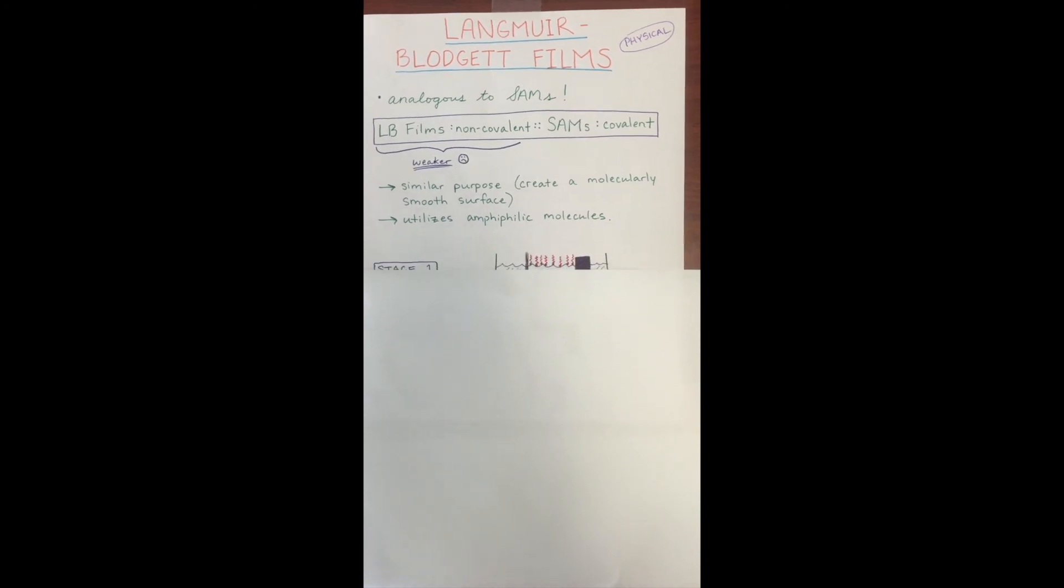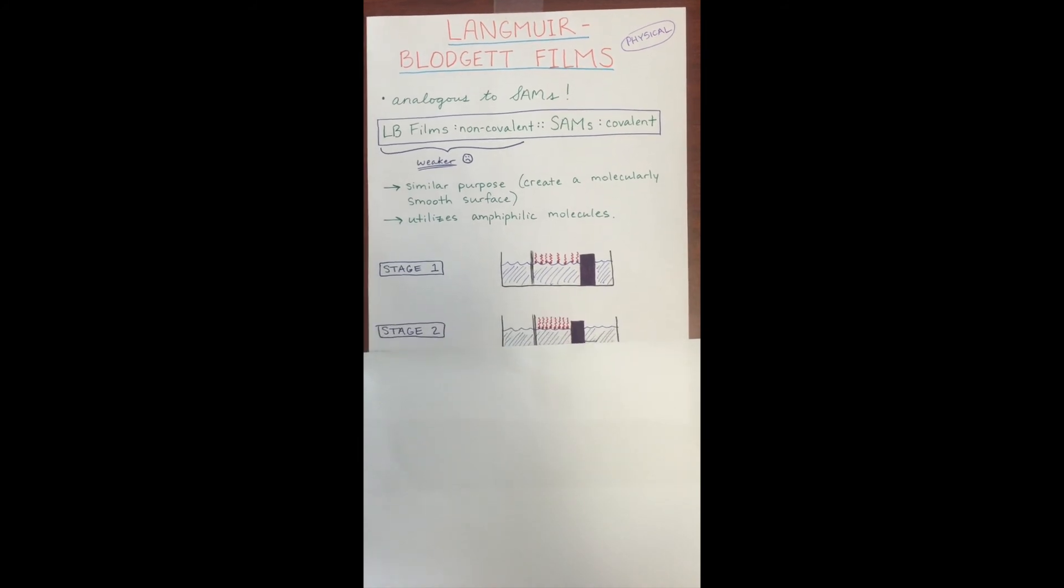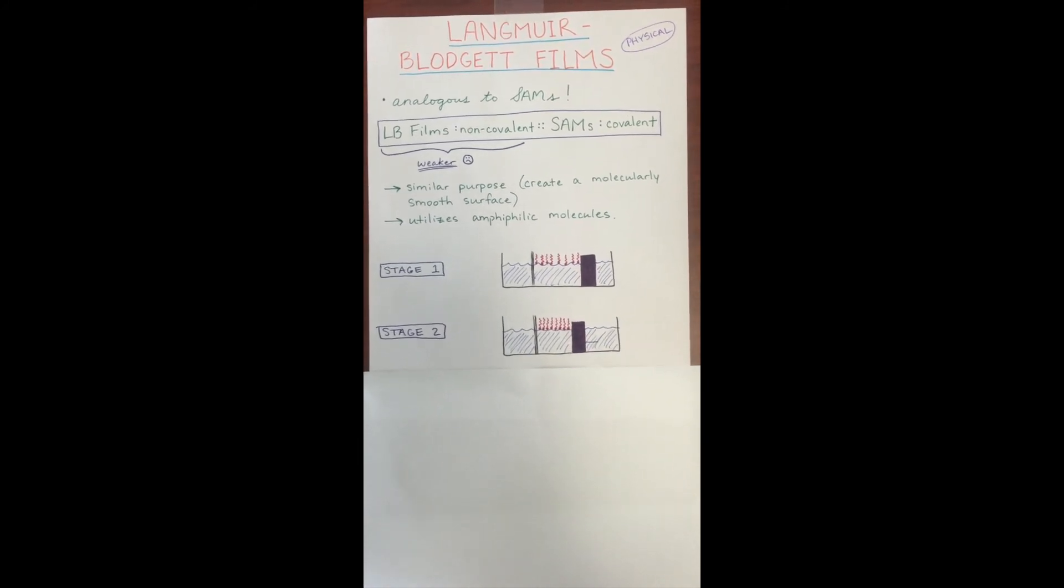So how do we apply a Langmuir Blodgett film? Essentially, one can push the amphiphilic molecules in an orderly manner and force them to adhere onto the biomaterial.